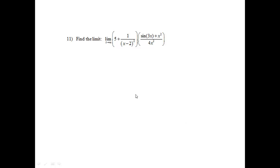Problem 11. Find the limit as x approaches infinity of 5 plus 1 over x minus 2 squared times the quantity sine of 3x plus x squared over 4x squared.